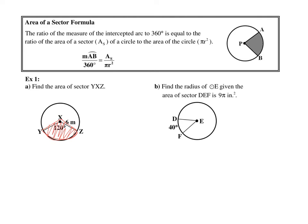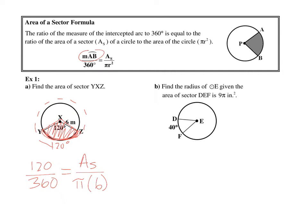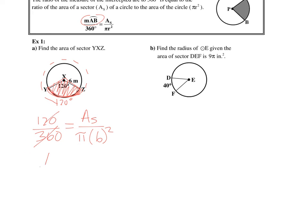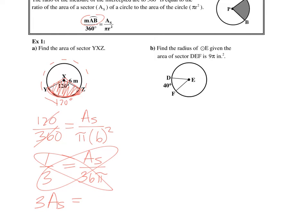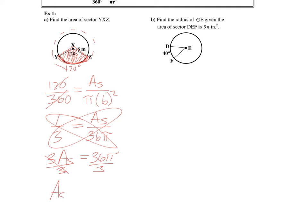Example one: find the area of sector YXZ. The arc measure of arc YZ is 120 degrees. So we set up 120 over 360 equal to the area of the sector over pi r squared, where r equals 6. This simplifies to one-third equals area of the sector over 36 pi. Cross-multiplying: 3 times the area of the sector equals 36 pi, so the area of the sector equals 12 pi meters squared.